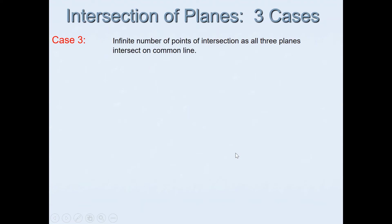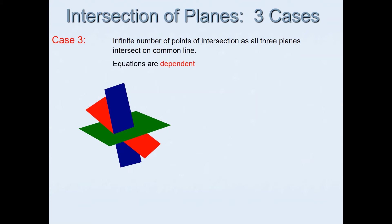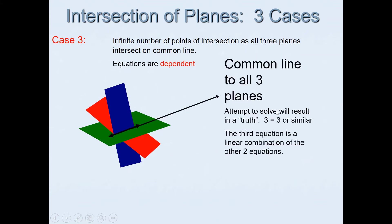Case 3 has an infinite number of points of intersection, leading to multiple solutions — the equations are dependent. The points of intersection appear as a line common to all three planes, as shown in the graphical representation. You can see that one line is a common intersection for all three planes. If you attempt to solve equations like this you will end up with something like 3 equals 3 or 5 equals 5, indicating multiple solutions.